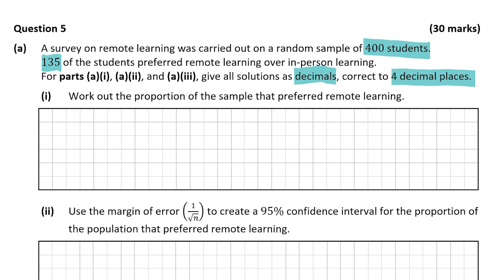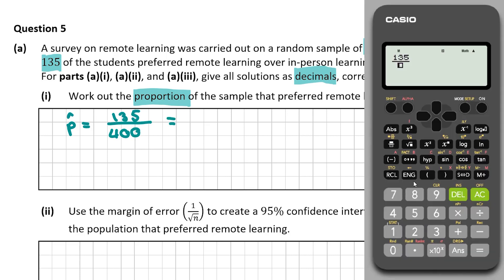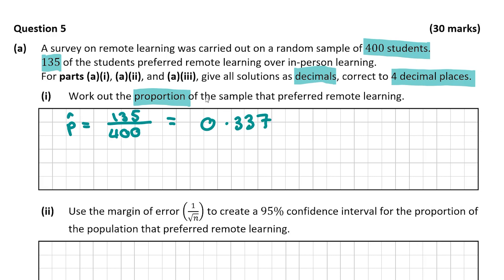Question A part 1 asks us to work out the proportion of the sample that preferred remote learning. P-hat is used to denote the proportion when dealing with statistics. So P-hat is equal to 135 over 400. Using our calculator, the proportion is equal to 0.3375.